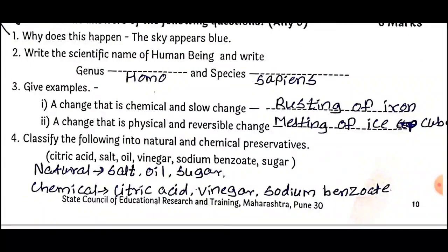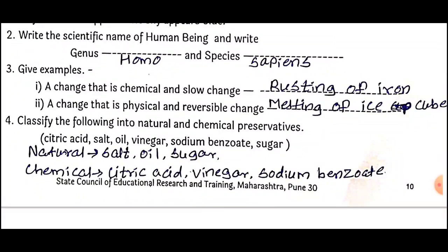Question Number 4: Classify the following into natural and chemical preservatives. The options are citric acid, salt, oil, vinegar, sodium benzoate, and sugar. The natural preservatives are salt, oil, and sugar. The chemical preservatives are citric acid, vinegar, and sodium benzoate.